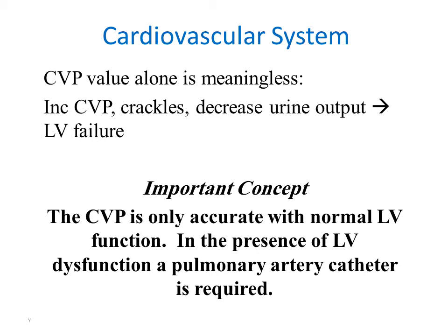Central venous pressure value alone is meaningless as an isolated reading. Increased central venous pressure with crackles and decreased urine output may occur in patients with left ventricular failure — meaning it is not necessarily only caused by right-side function impairment or hypervolemia; left ventricular failure can also raise the central venous pressure reading.